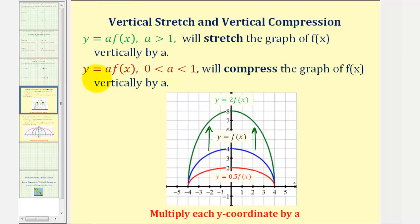Now let's consider when a is between zero and one — more specifically, let's say when a is zero point five, or one half. Notice the graph of y equals zero point five times f of x is vertically compressed, because to find corresponding points on zero point five times f of x, we would multiply each y coordinate of the parent function f of x by one half. Therefore we can say the graph of zero point five times f of x would vertically compress f of x by one half.